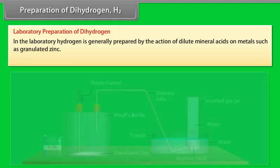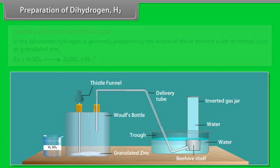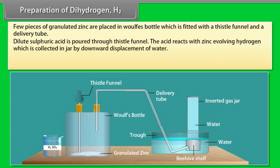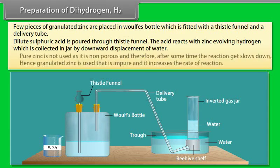In the laboratory, hydrogen is generally prepared by the action of dilute mineral acids on metals such as granulated zinc. Few pieces of granulated zinc are placed in a Woulfe's bottle which is fitted with a thistle funnel and a delivery tube. Dilute sulphuric acid is poured through thistle funnel. The acid reacts with zinc, evolving hydrogen, which is collected in jar by downward displacement of water. Pure zinc is not used as it is non-porous and therefore, after some time, the reaction slows down. Hence, granulated zinc is used that is impure and it increases the rate of reaction.